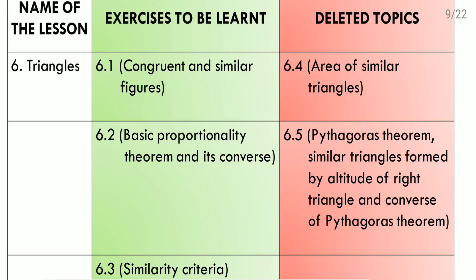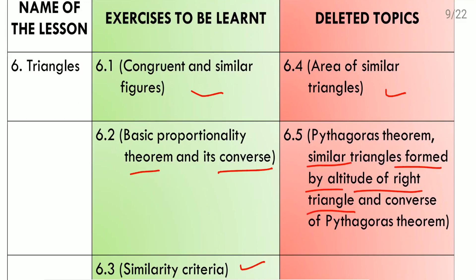Sixth lesson: Triangles. Exercise 6.1 covers congruent and similar figures. Exercise 6.2 depends on the basic proportionality theorem and its converse. Exercise 6.3 has similarity criteria. We need to do all three exercises. However, exercise 6.4, about areas of similar triangles, and exercise 6.5, which includes Pythagoras theorem, its converse, and the theorem on similar triangles formed by the altitude of a right triangle — all three theorems are deleted, and exercises 6.4 and 6.5 are deleted from the portion.